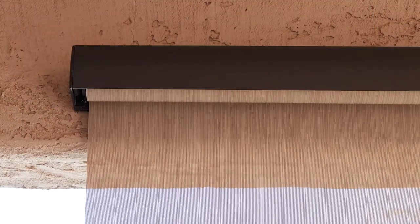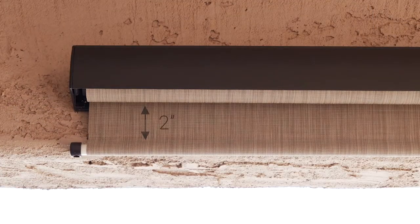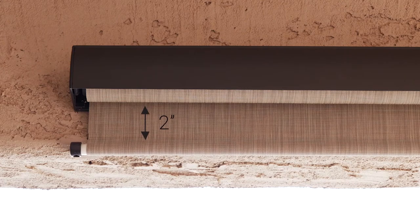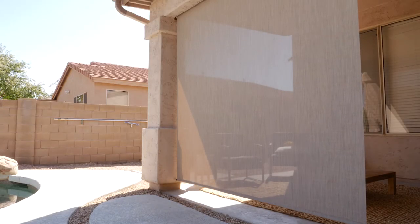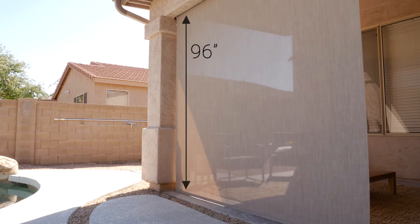When raising your shade, the top limit stops at about 2 inches from the bottom of the cassette. When it's lowered, the shade stops at a bottom limit of about 96 inches from the cassette.